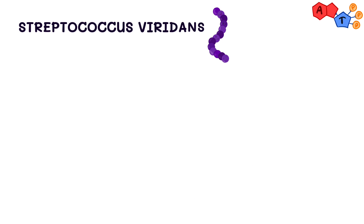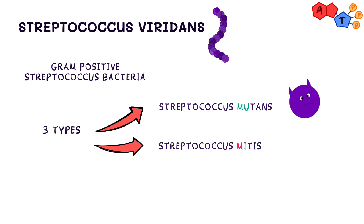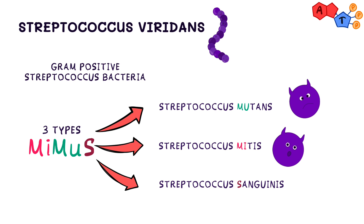Streptococcus viridans is in the family of gram-positive Streptococcus bacteria. It has three main different types: Streptococcus mutans, Streptococcus mitis, and Streptococcus sanguinis. Remember 'MiMuS' for viridans. It's good to know them by name, because in some questions they might put one of these as a representative of the Streptococcus viridans group.